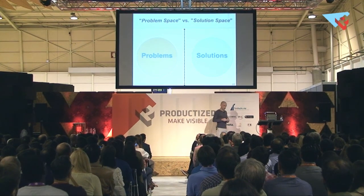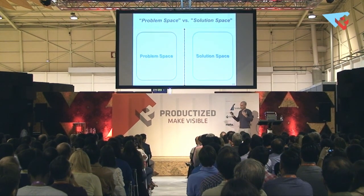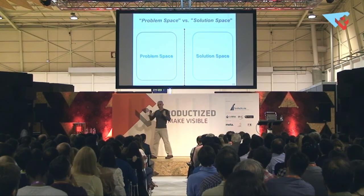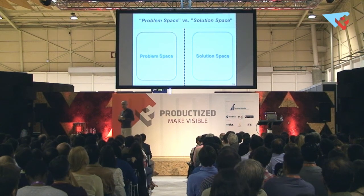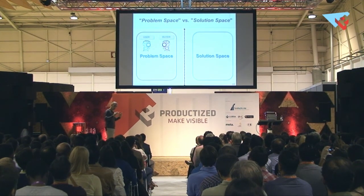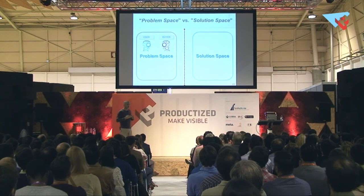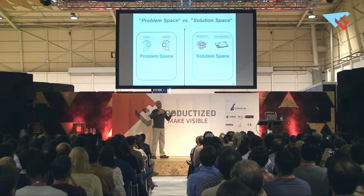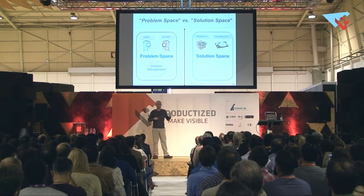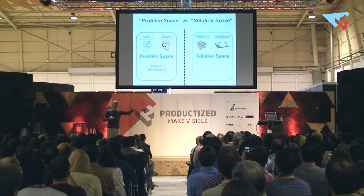We can look at our lives as divided into problems and solutions. There's a demarcation line between the problem space and the solution space. The user and the buyer are looking at the product to solve their respective problems — the parents bought the toy to solve a certain problem, and the child uses it to solve another. So the user and the buyer are in the problem space, while the product and the technology that builds it are in the solution space. Product management resides in the problem space with the user and the buyer.